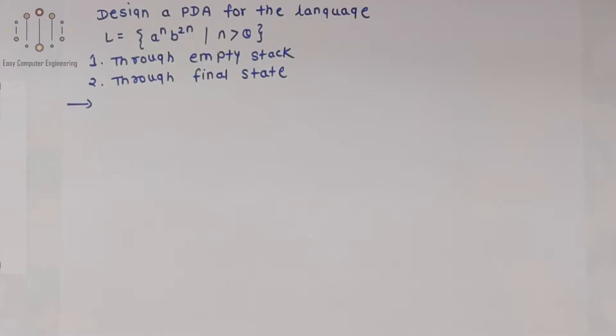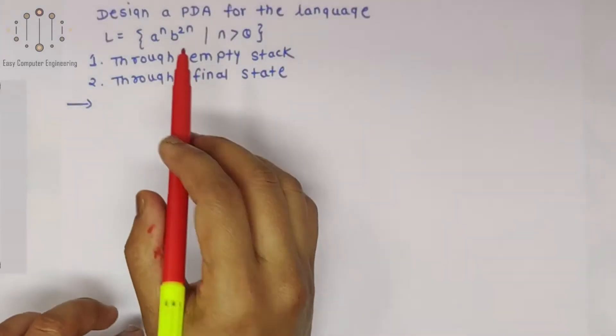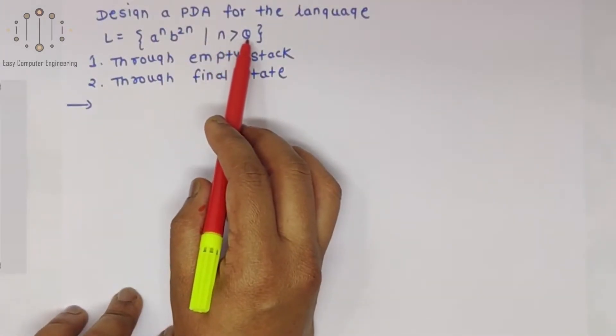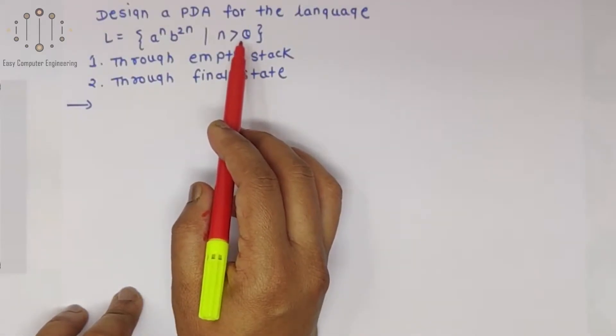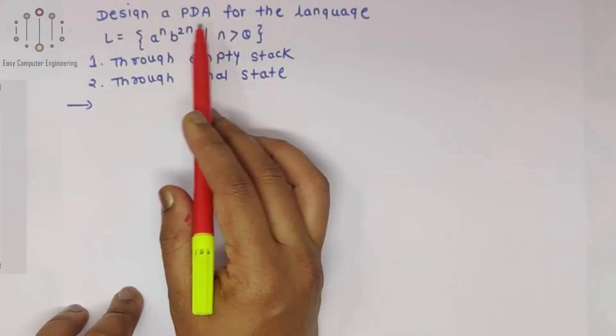This means B length is double the A length, and the condition N is greater than zero means we cannot accept the epsilon string.